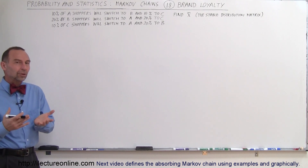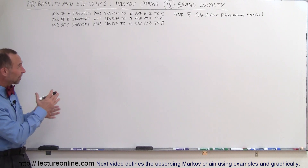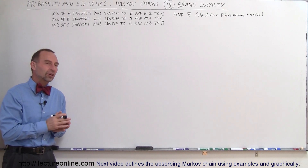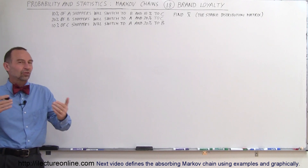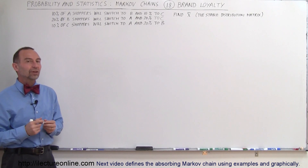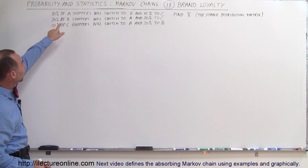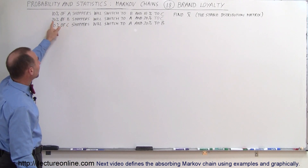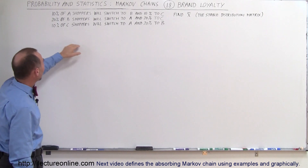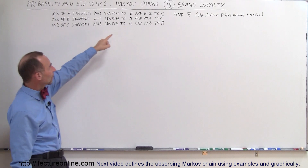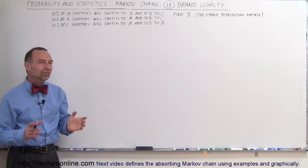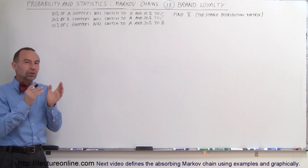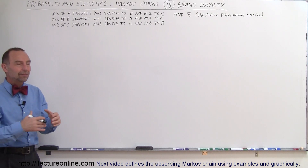We have an example that shows brand loyalty. There are three stores — A, B, and C — and each store will retain a certain percentage of their customers, but some customers will try the other stores. The conditions are: 10% of shoppers at A switch to B and 10% switch to C; 20% of shoppers at B switch to A and 20% switch to C; and 10% of shoppers at C switch to A and 20% switch to B. We want to find the stable distribution matrix — how many customers go to each store over time.